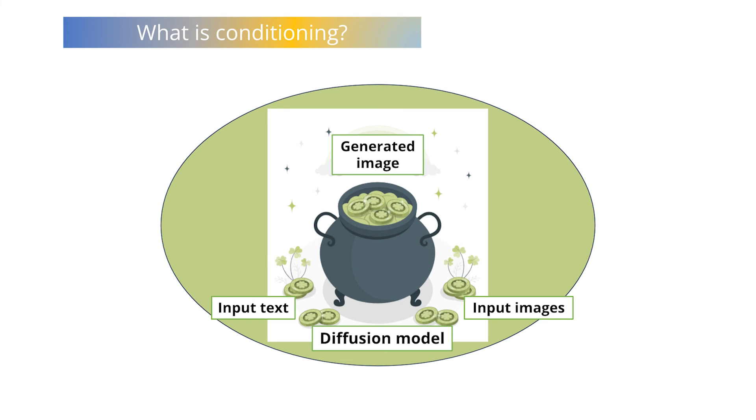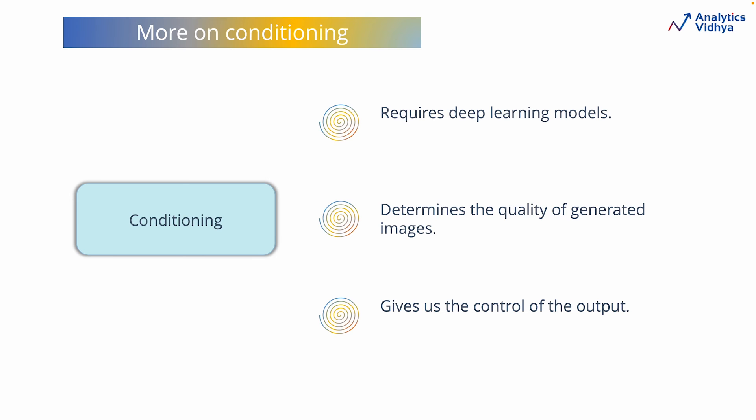To comprehend this conditioning better, imagine you have a magic cooking pot that can create delicious dishes based on the ingredients you provide. This cooking pot represents the diffusion-based image generative model, and the list of ingredients that you put into the pot represent the input text or images. The diffusion model uses the input data for conditioning to generate the required images. To achieve this conditioning, these tools use separate deep learning models. It is the complexity and the quality of these conditioning models that determines the quality of the generated images from the image generative tools. Thus, through conditioning, the image generative tool gives us control over the output of the diffusion models.